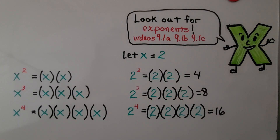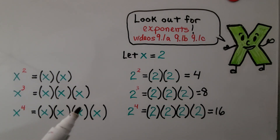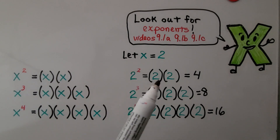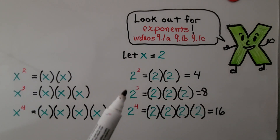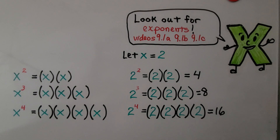Be careful — remember to look out for exponents. We learned about them in lesson 9.1a, b, and c. Here we have x squared, which is x raised to the second power, meaning x times x. x cubed is x times x times x. x raised to the fourth power is x times x times x times x. If x equals 2: 2 squared is 4, 2 cubed is 8, and 2 to the fourth power is 16. Even though they have the same base, because the exponents are different, we have a different product. So be careful.